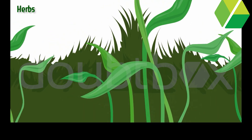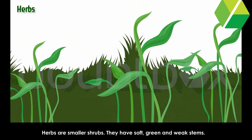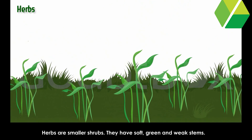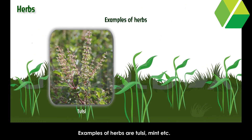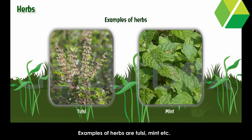Herbs: Herbs are smaller shrubs. They have soft, green and weak stems. Examples of herbs are tulsi, mint, etc.